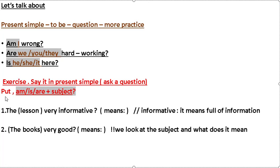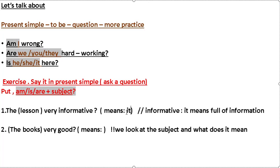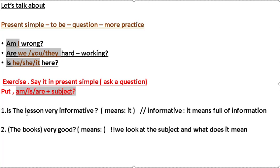Exercise: say it in present simple — ask a question. Put the verb 'to be' (am/is/are) before the subject. Example: 'The lesson is very informative.' To make a question: 'Is the lesson very informative?' 'Informative' means full of information.